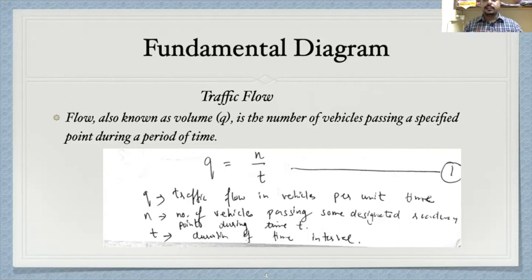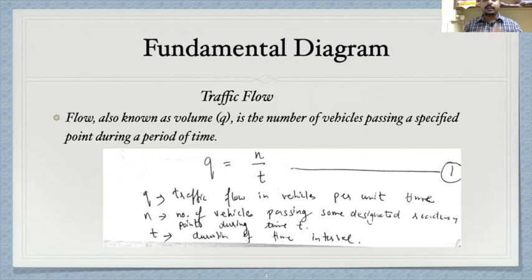Before studying the fundamental diagram, you must be clear about the macroscopic parameters: traffic flow, traffic density, and traffic speed. Traffic flow is also termed traffic volume or traffic intensity — do not be confused if someone uses these terms interchangeably. Traffic flow is the number of vehicles passing a specified point during a period of time, given by the number of vehicles divided by the time. For example, 1000 vehicles in 10 hours gives a traffic flow of 100 vehicles per hour.